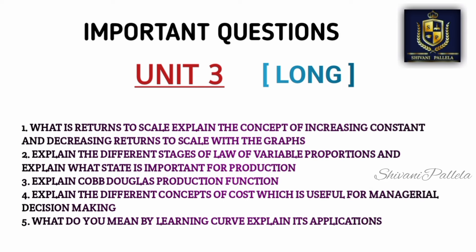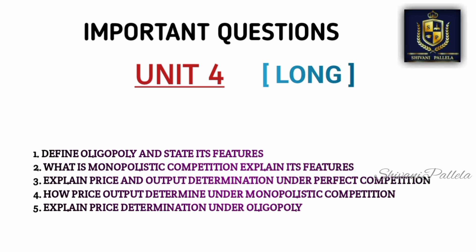From Unit 3, I have given five questions: law of returns to scale, law of variable proportions, and different concepts of cost useful for managerial decision making. Concentrate on returns to scale and law of variable proportions — one question from these will come in the eighth question slot. From Unit 4, I have given five questions: oligopoly is one of the most important and repeated topics, along with monopolistic competition and price and output determination under perfect competition. Oligopoly, monopoly, and monopolistic competition are the three most important concepts in Unit 4. Diagrams are required — look into your materials or follow lectures on YouTube.